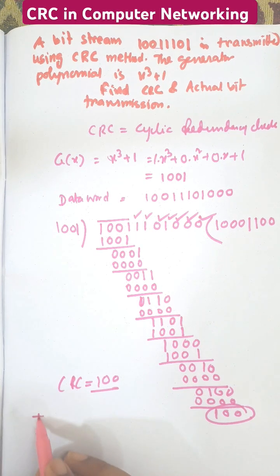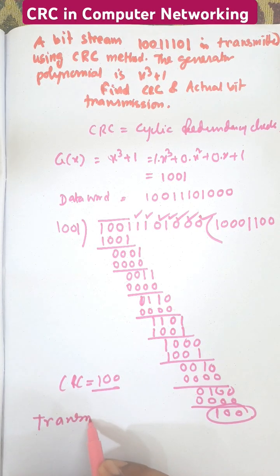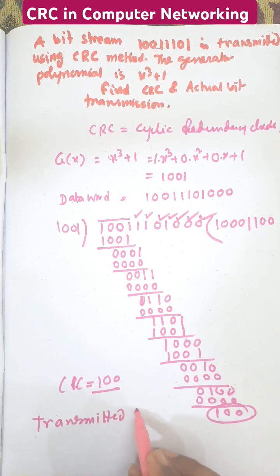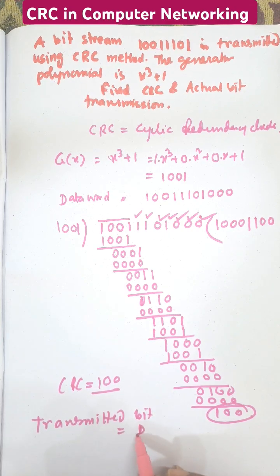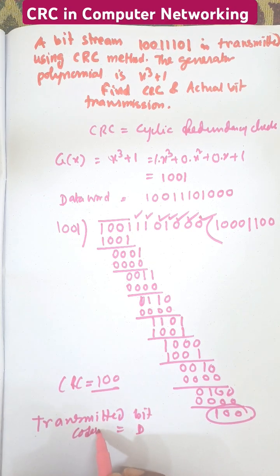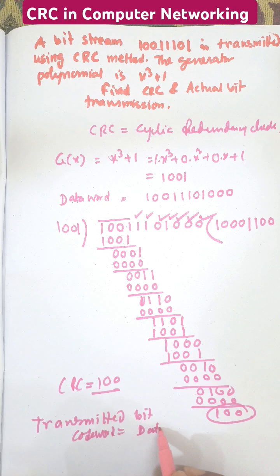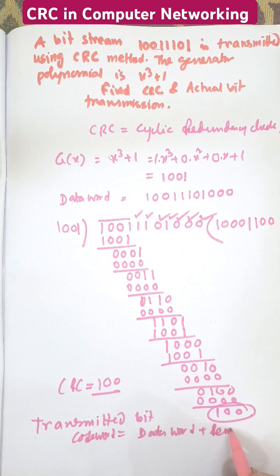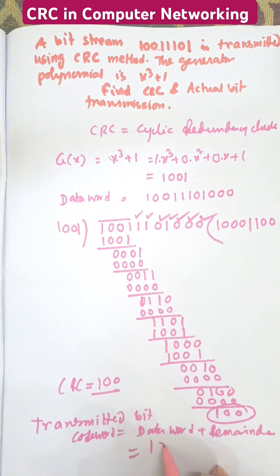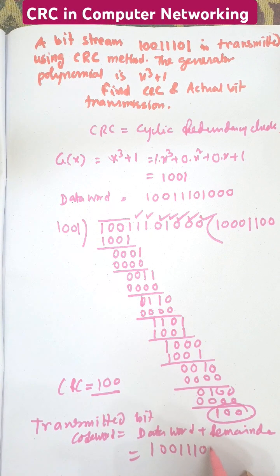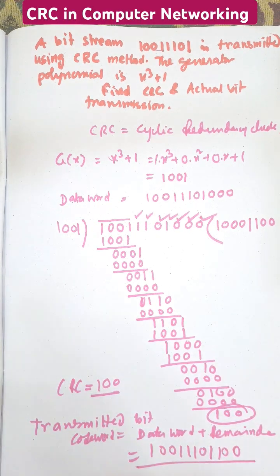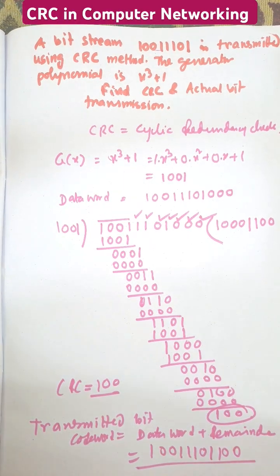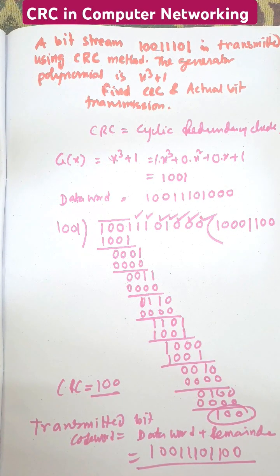The transmitted bit equals the code word, which equals data word plus remainder. The data word is 10011101 and the CRC bits are 100, so the transmitted codeword is 10011101100. Thank you very much for watching this video. Share and subscribe. Thank you.